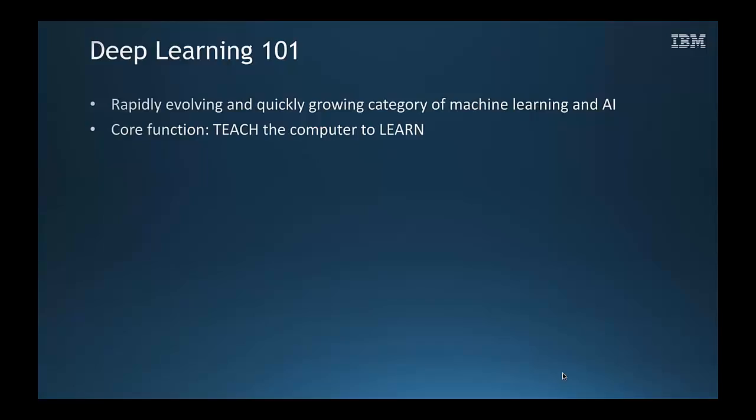Teach the computer how to interpret the data. In deep learning versus traditional machine learning, the computer, through our application of large data sets and training, builds an algorithm for interpreting data and being able to perceive changes in there.